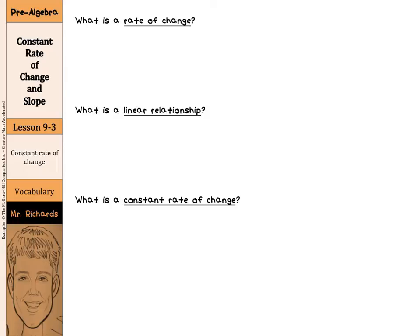Our objectives are to find the constant rate of change for a linear relationship and how to find the slope of a line. And before we do that, we need to start off with some key vocabulary.